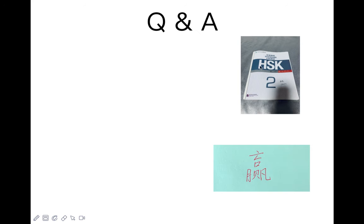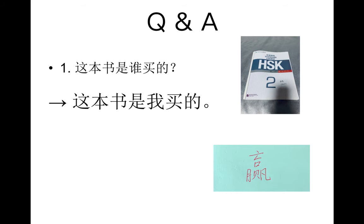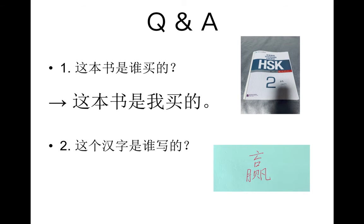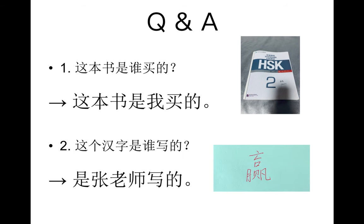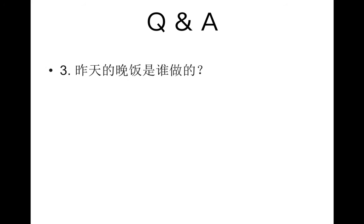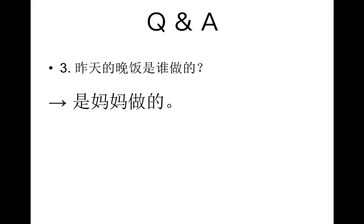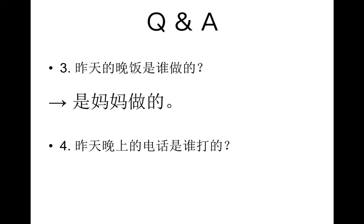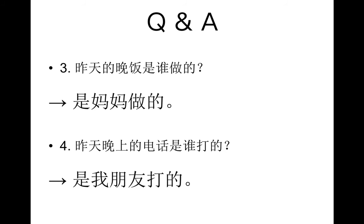看第一个语法：是什么什么的。比如说，这本书是谁买的？对了，这本书是我买的。这个汉字是谁写的？是我。所以，这个汉字是张老师写的。昨天的晚饭是谁做的？我的妈妈。所以怎么说？是妈妈做的。昨天晚上的电话是谁打的？我朋友。怎么说？是我朋友打的。